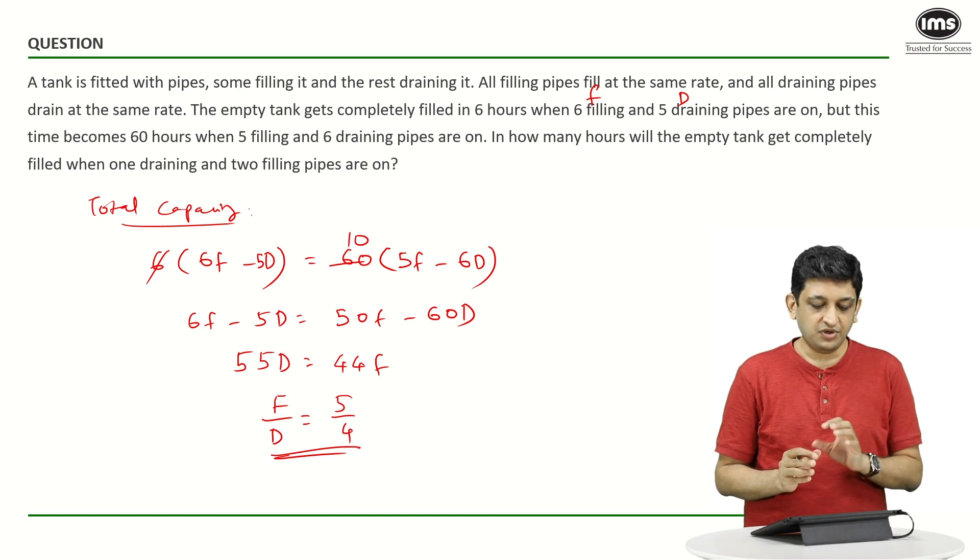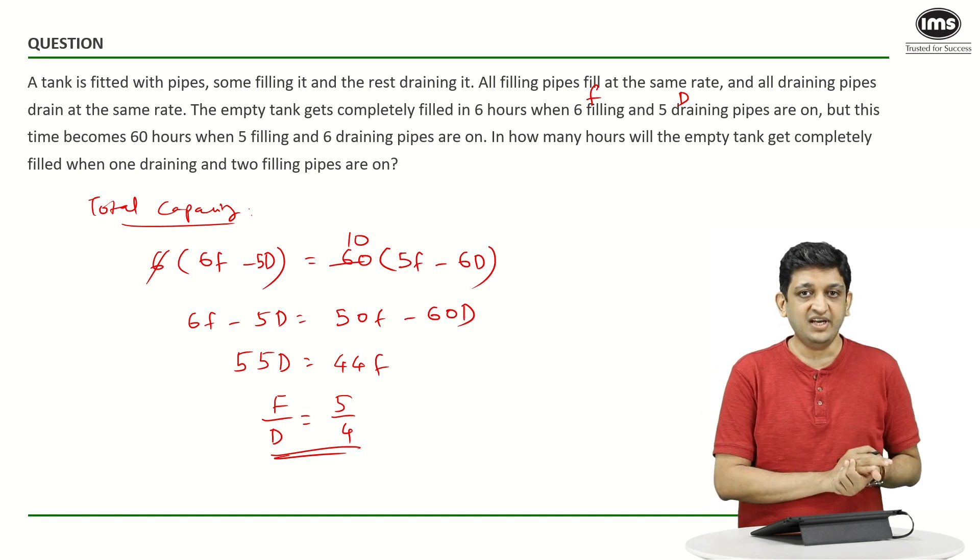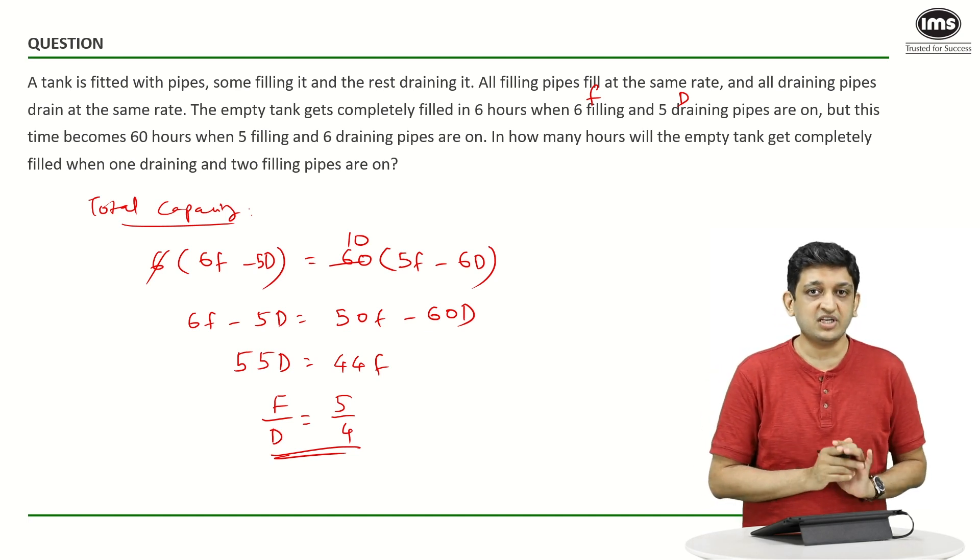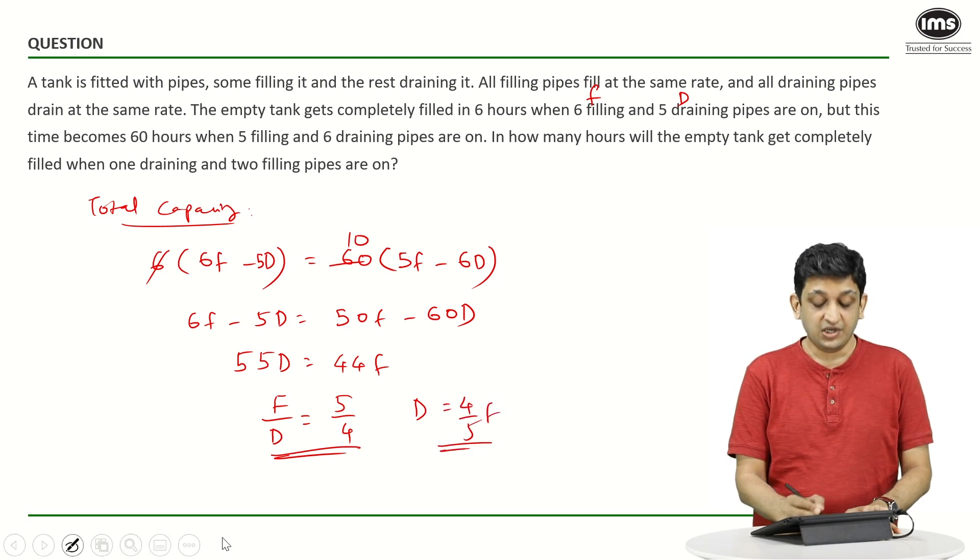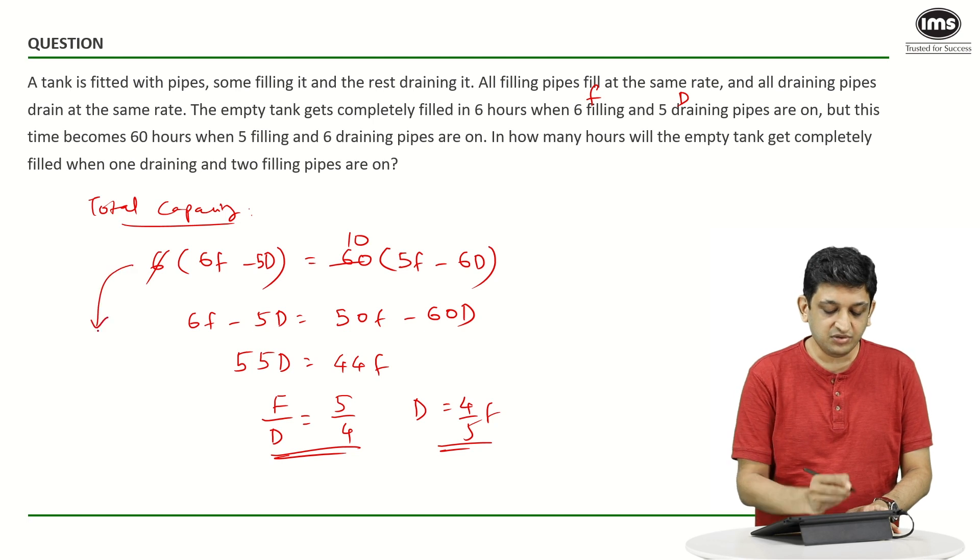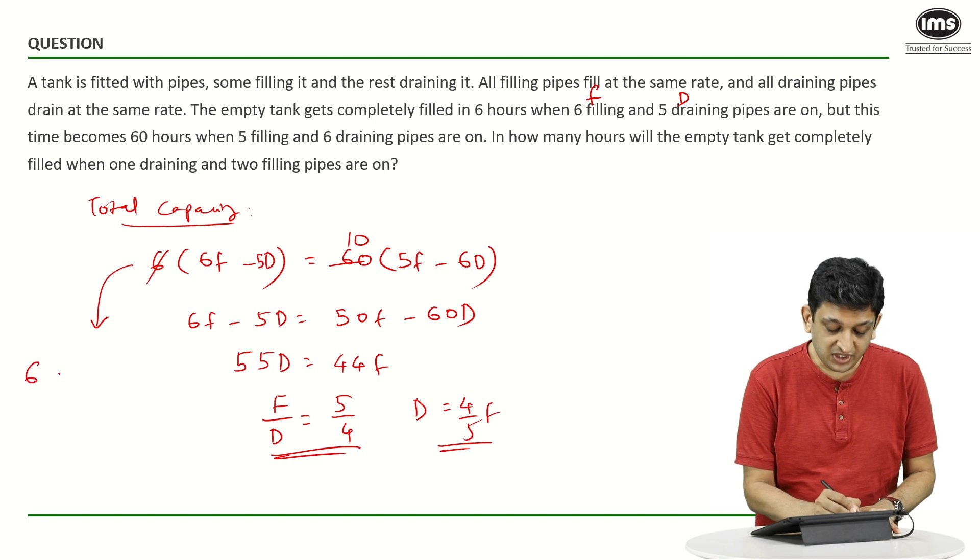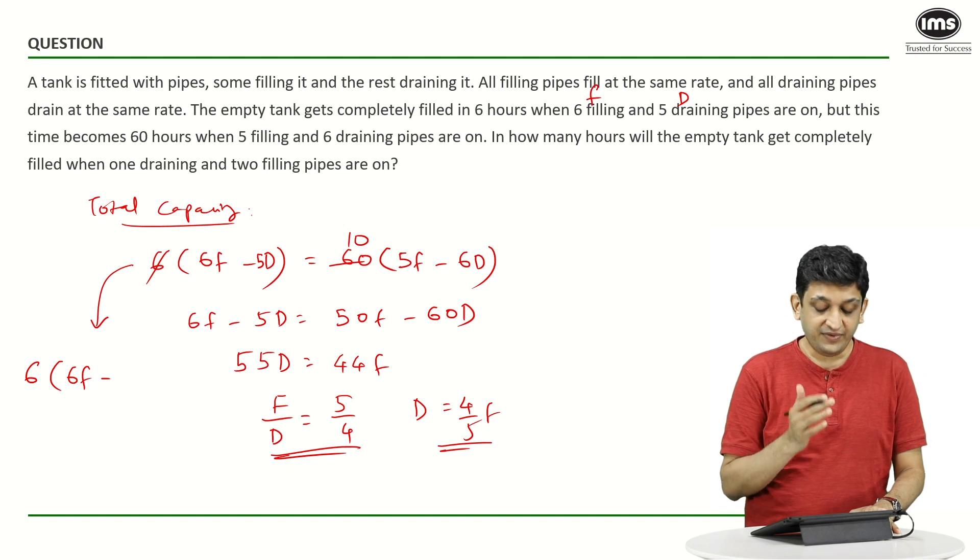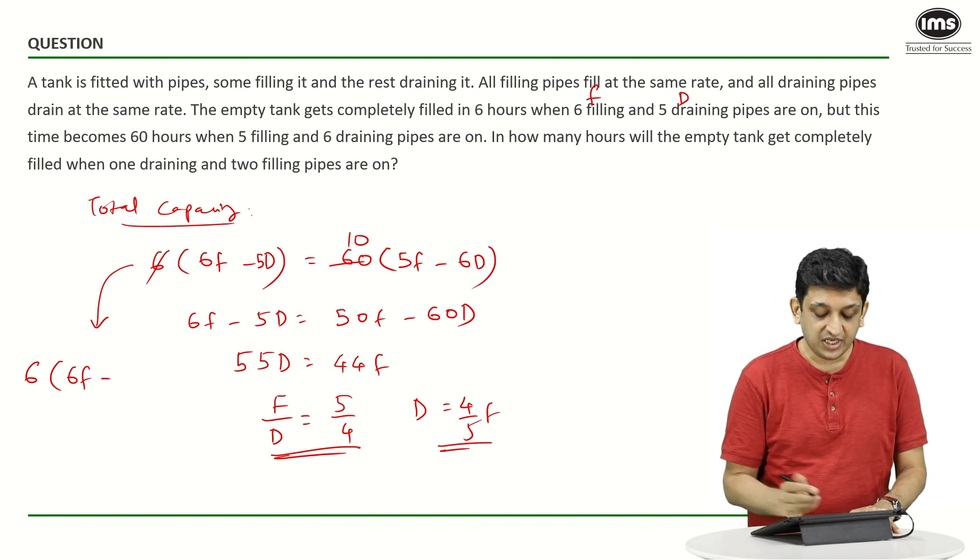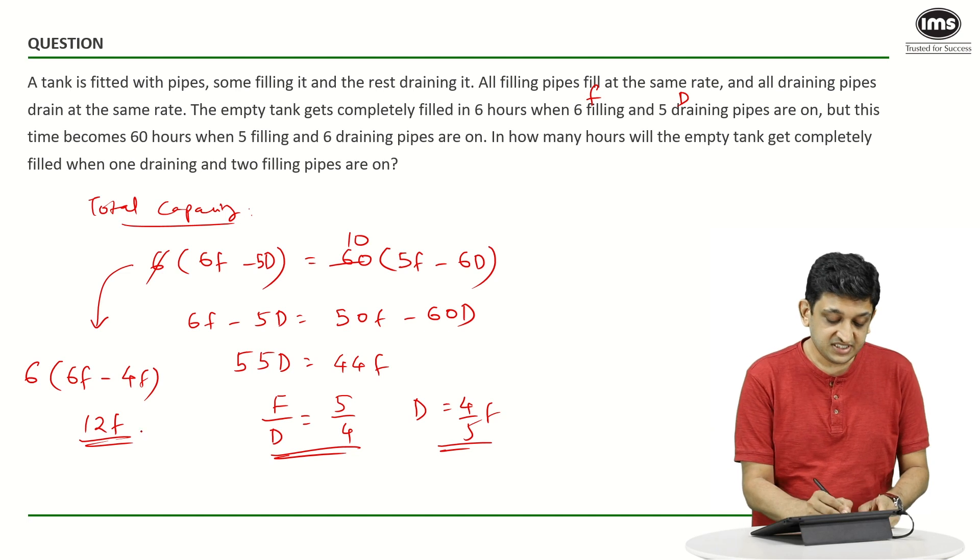Now, if you take F equal to 5, D equal to 4 and plug it back into the equation, or if you take D as 4 by 5 into F, you will still be able to figure out the total capacity. So, let us say that I take D equals 4 by 5F. Now, what I can do is I can take this and plug it back into this equation. The total capacity will be 6 into 6F minus 5 times D or 5 into 4 by 5F. So, we are going to get 4F here. So, the total capacity is going to be equal to 12F.